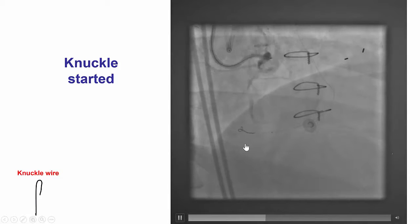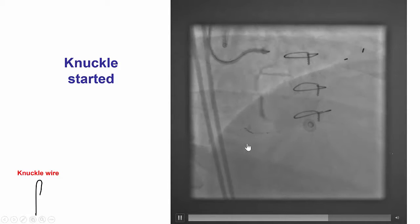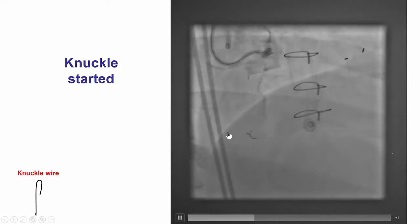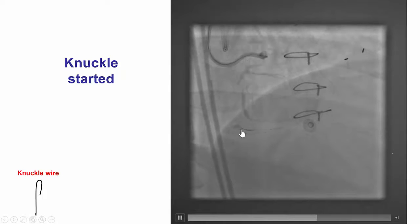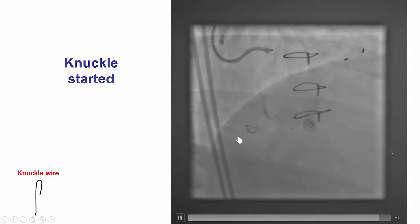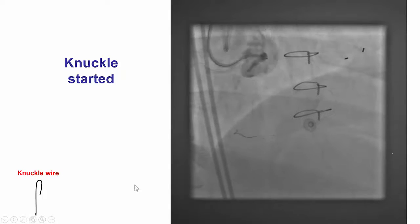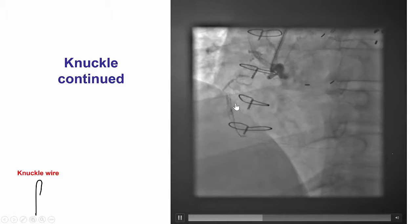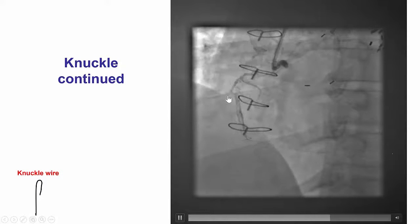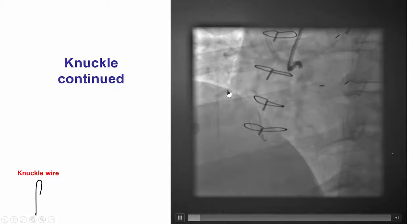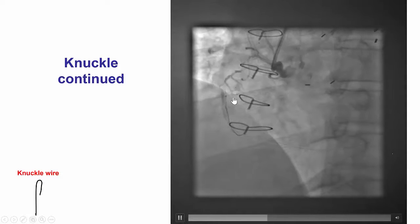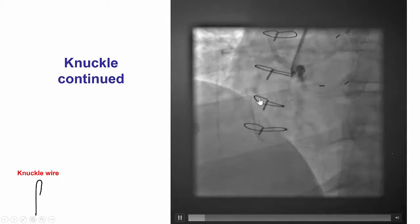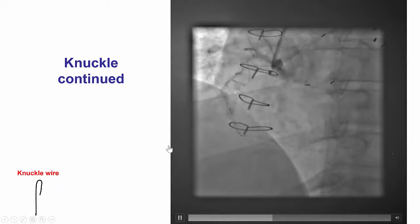However, after many attempts and after using the Pilot 200 guide wire, we were able to advance it into a knuckle distally, taking a very acute bend, which likely reflects high tortuosity at the distal part of the right coronary artery. The knuckle was advanced further up and is now moving in sync with the vessel that fills through antegrade injection, highlighting that we are indeed in the subintimal space next to the mid-right coronary artery.